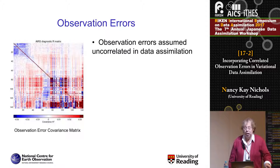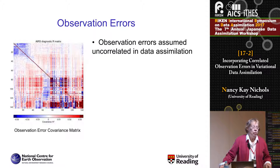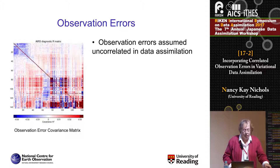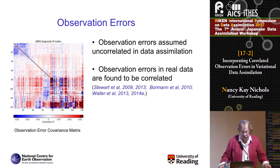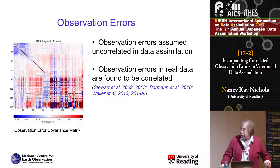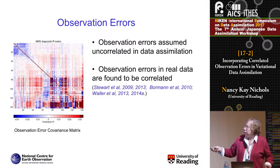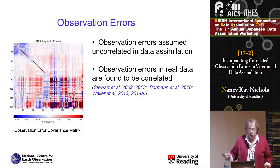Observation errors are assumed uncorrelated in the assimilation, meaning the observation error correlation matrix is diagonal — easy to invert and computationally efficient, which is an important reason for keeping it there. However, observations in real data are certainly found to be correlated. As long ago as 2009 and 2010, observation error correlations were found in both the Met Office and the ECMWF data. This is an example of the Met Office error data correlation matrix, and you can see there are large correlations, particularly between channels which are humidity channels, and also some in temperature channels — quite strong correlations that really should be taken into account.